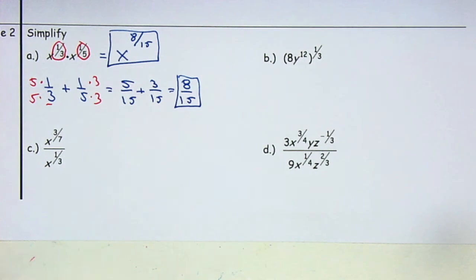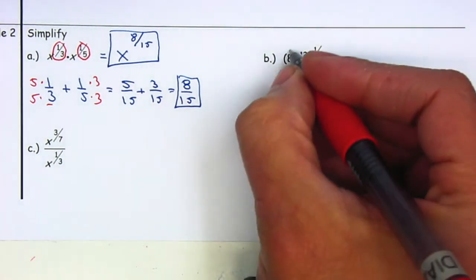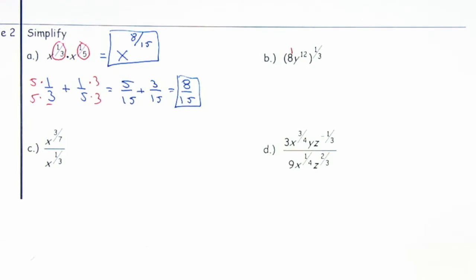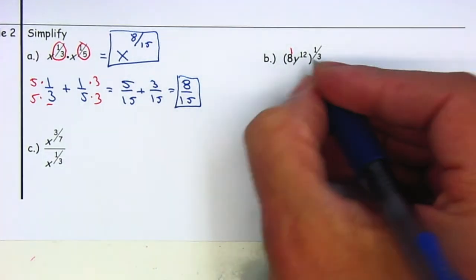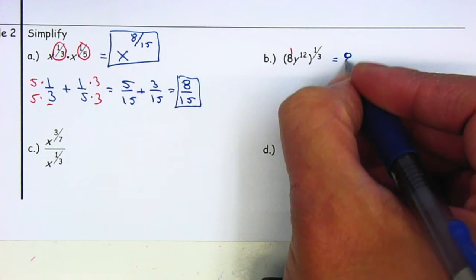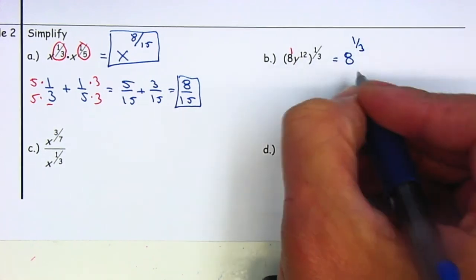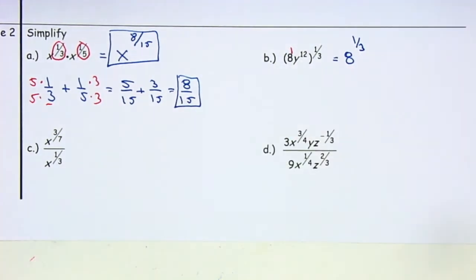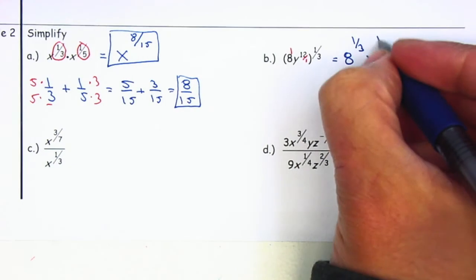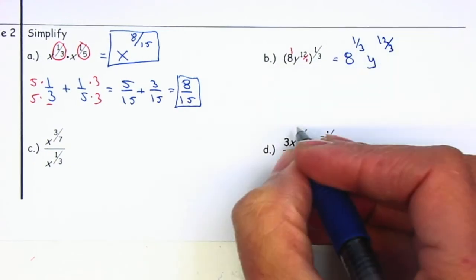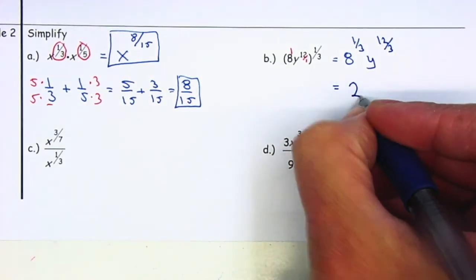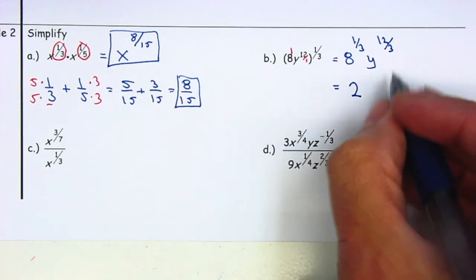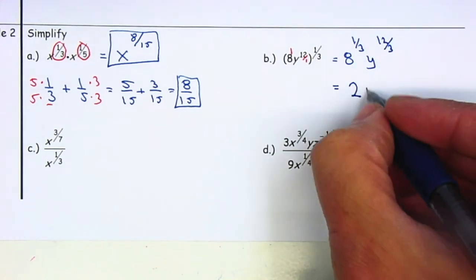For letter B, the exponent is outside the parentheses so we're going to multiply. Don't forget to place that exponent for the 8 — automatically there's a 1, so I want you guys to place your exponent if you're going to multiply. 1 times 1/3 will give me 8 to the 1/3. To multiply a whole number by a fraction I'm going to place it over 1 — so it'll be y. 12 times 1 is 12; 1 times 3 is 3. I'm going to simplify: 8 to the 1/3 is equal to 2 — that's the cube root of 8. y to the 12/3 — 12 over 3 is equal to 4 — so the answer is 2y to the 4th.